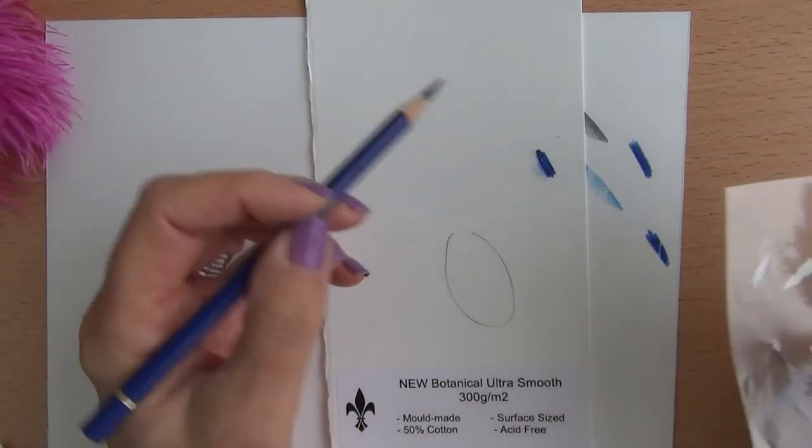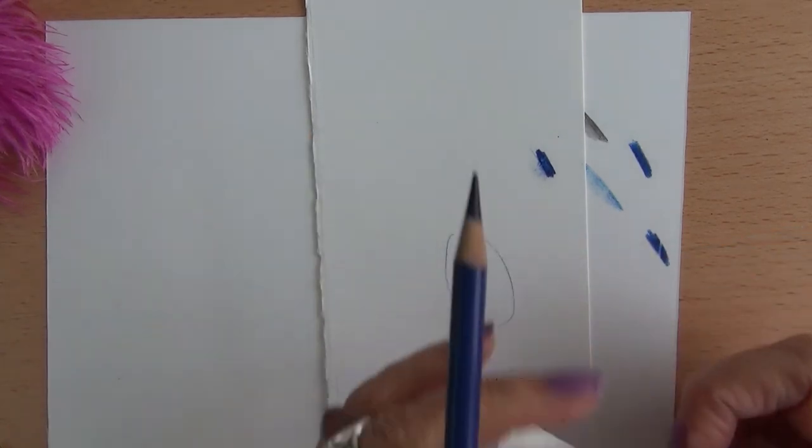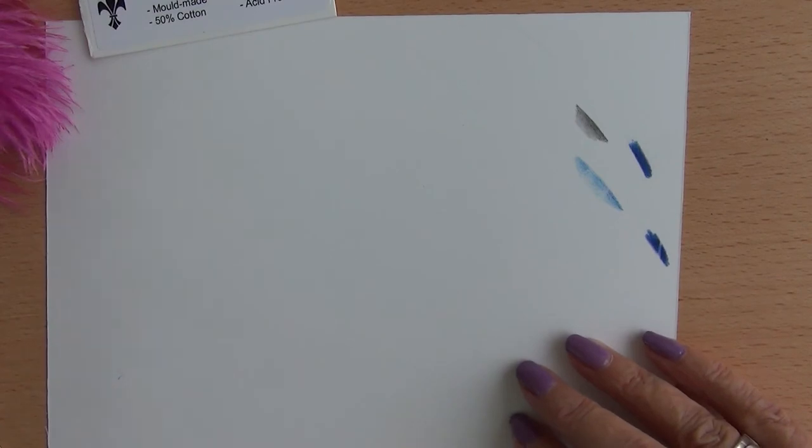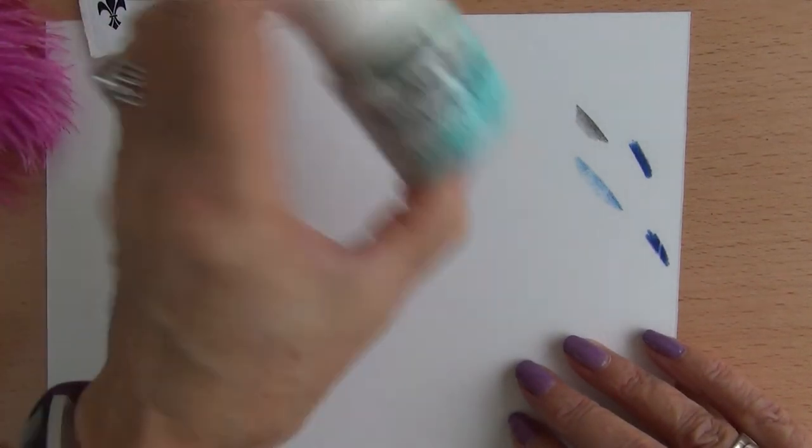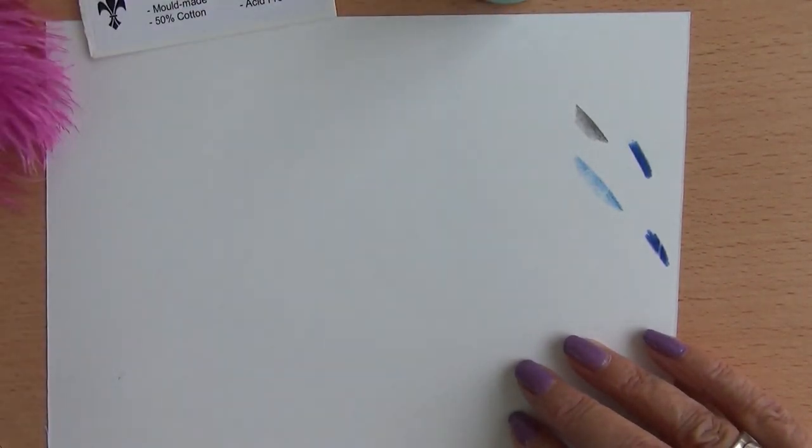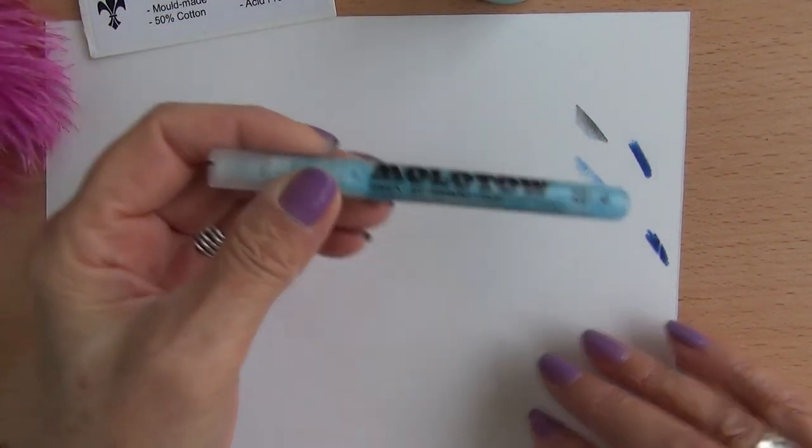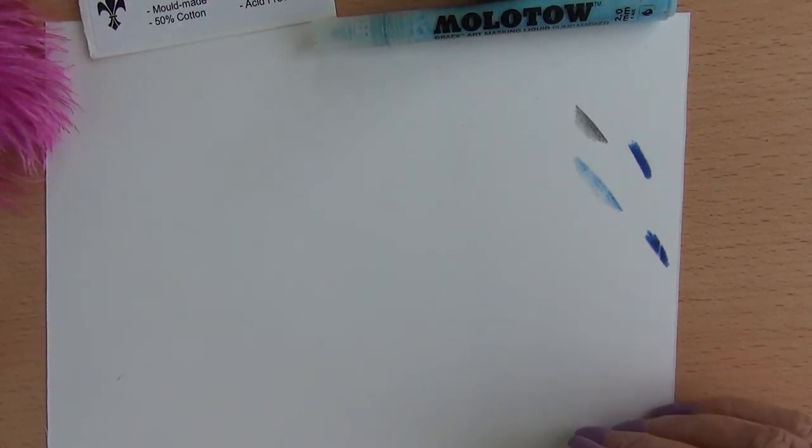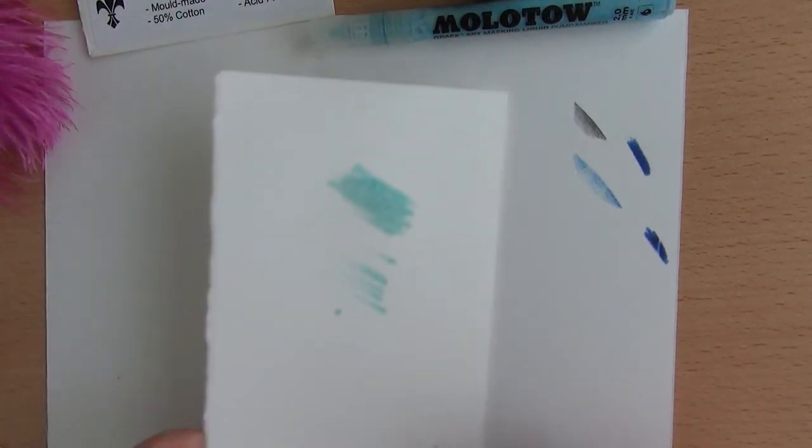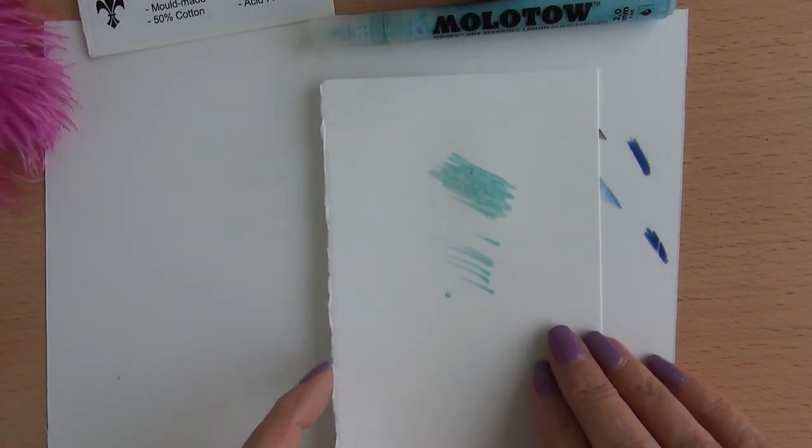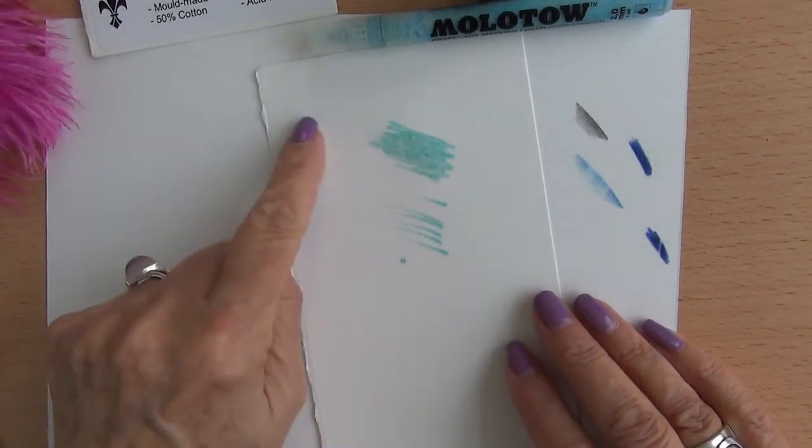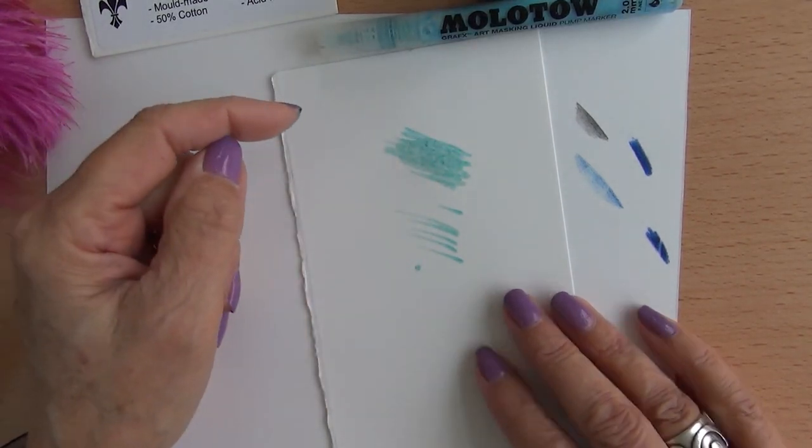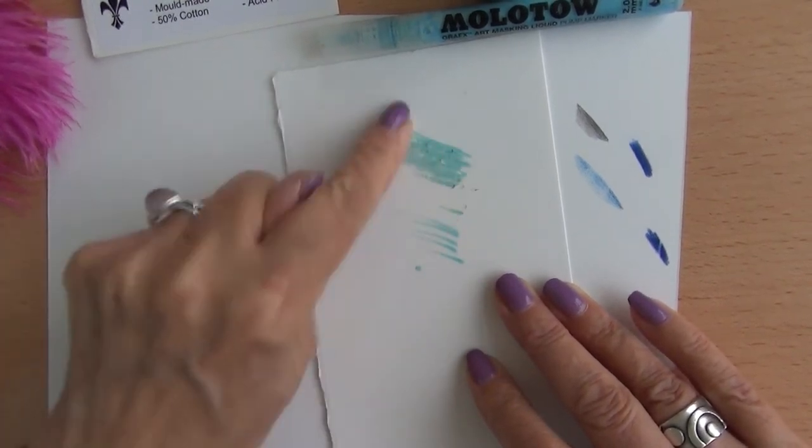Other equipment that you might be using is masking fluid, that's the Pebeo one, this is a Molotov pen with masking fluid in. So I know it works on here, this is the Botanical Ultra Smooth so I put some on here before and this is dry now and I've only just put it on so I'm going to just try and take it off.